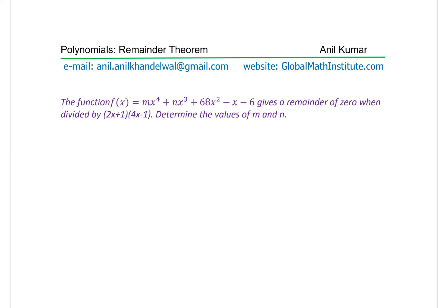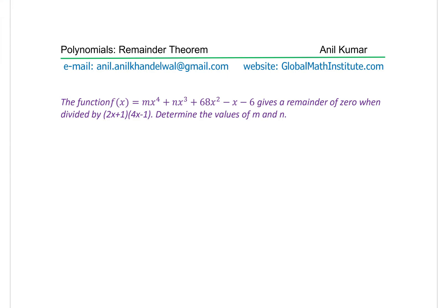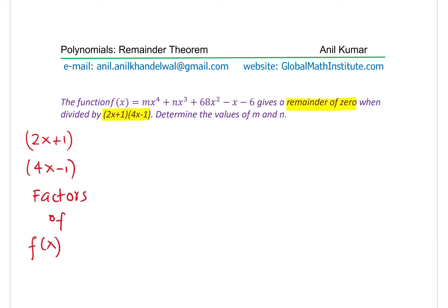The key observation here is that the function gives a remainder of 0 when divided by those terms, which really means that (2x + 1) and (4x - 1) are factors of the polynomial. So let's note that: (2x + 1) and (4x - 1) are factors of f(x).